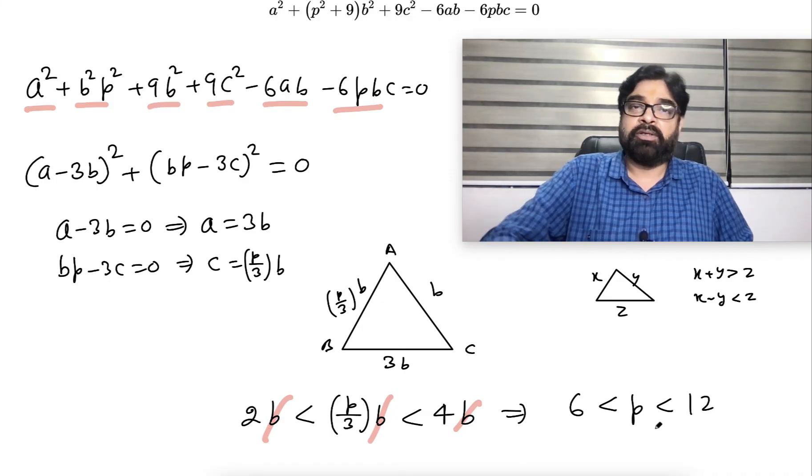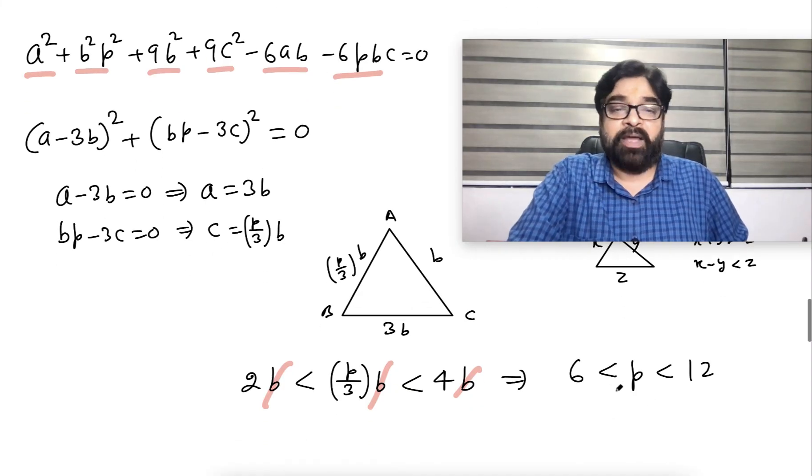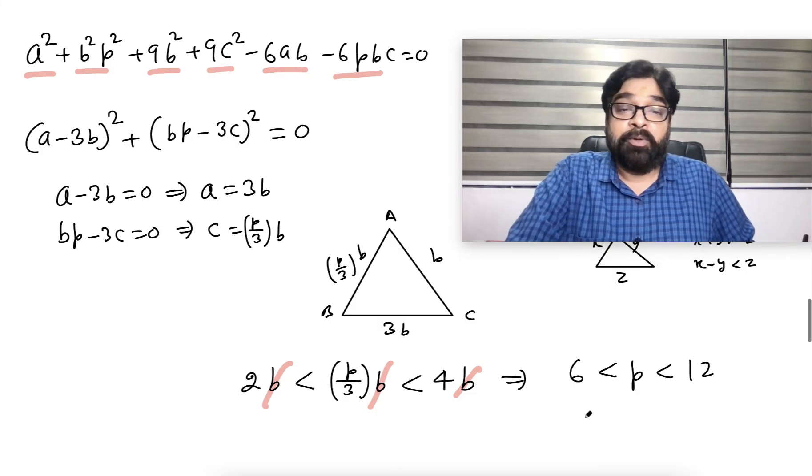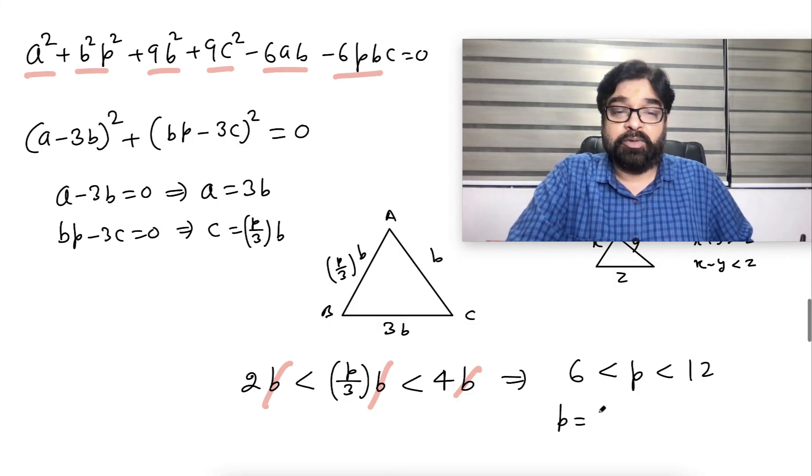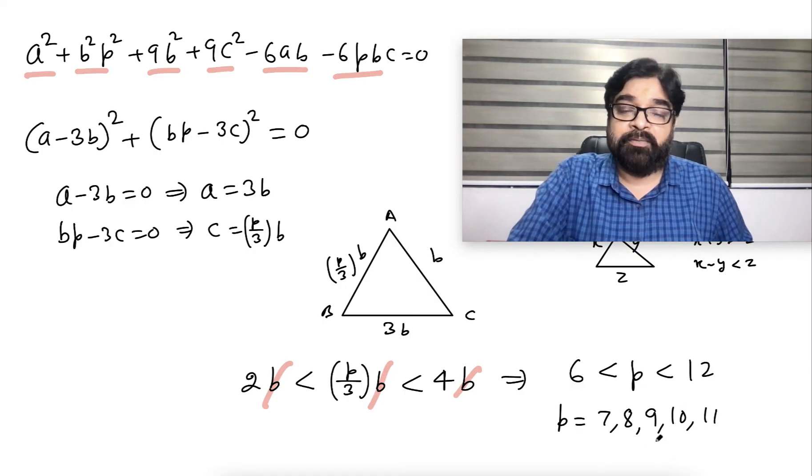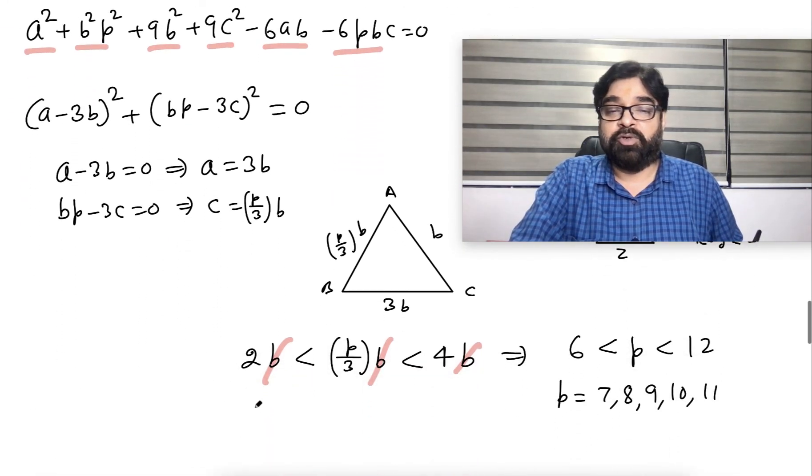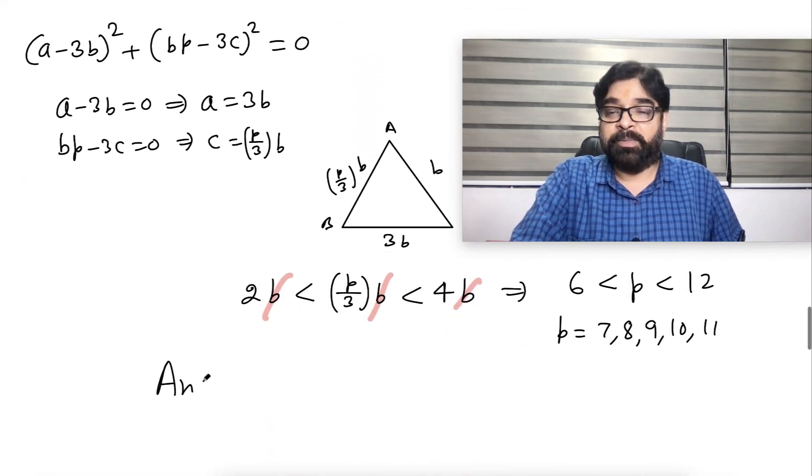It will become 6 < p < 12. That's all, question over. They are asking integral values between - be clear, equal sign will not come. Integral values between 6 and 12: p = 7, 8, 9, 10, 11. So how many integral values are there? 5 integral values.